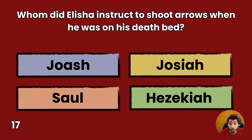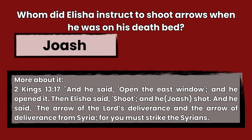Question 17: Whom did Elisha instruct to shoot arrows when he was on his deathbed? Joash, Josiah, Saul, or Hezekiah? Answer: Joash. 2 Kings 13:17 — And he said, Open the east window, and he opened it. Then Elisha said, Shoot, and Joash shot, and he said, The arrow of the Lord's deliverance and the arrow of deliverance from Syria, for you must strike the Syrians.